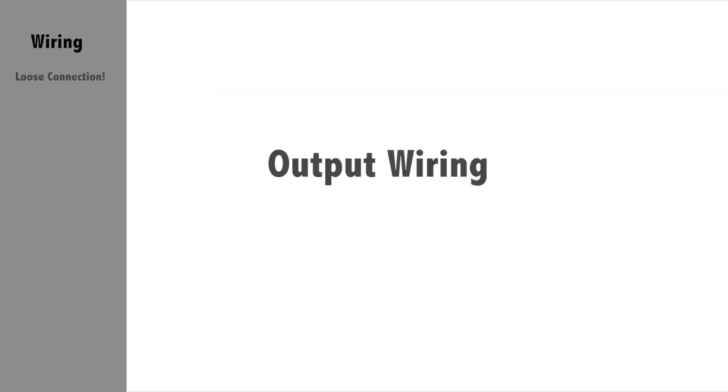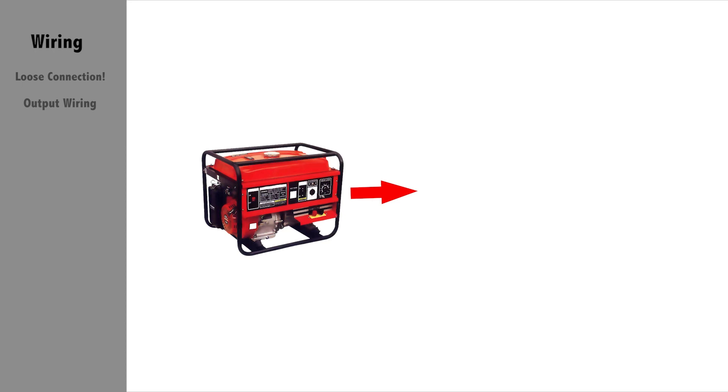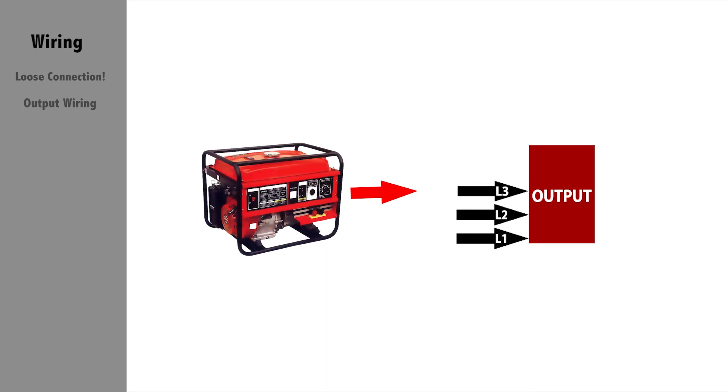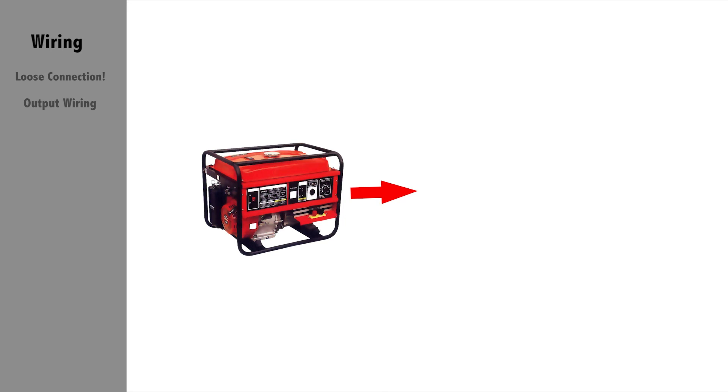Lastly, it is important that your generator's output wiring matches your Outback inverter configuration such as single phase, split phase, or three phase. If you are using a transformer for generator balancing, step up or step down, it's a good idea to check for trip breakers and connections within the transformer wiring.